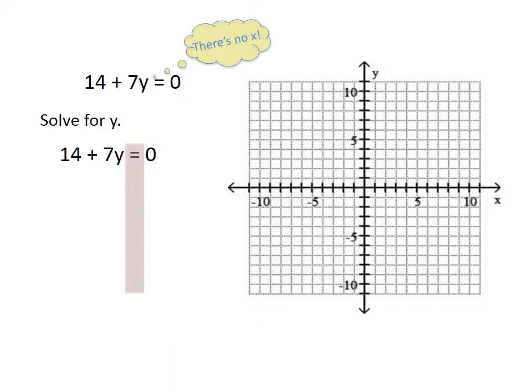Which number are you going to move first? The 14, by subtracting it on both sides. That removes it from the left, and you can bring down your 7y. 0 minus 14 is negative 14 on the right-hand side. Your equation is now 7y equals negative 14.